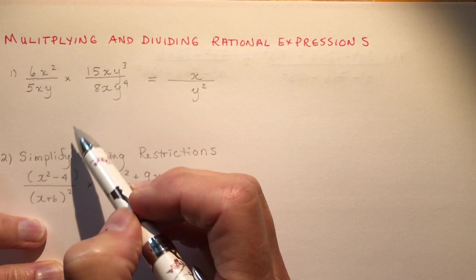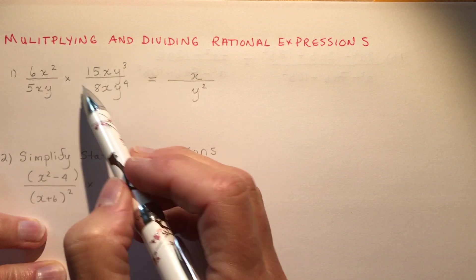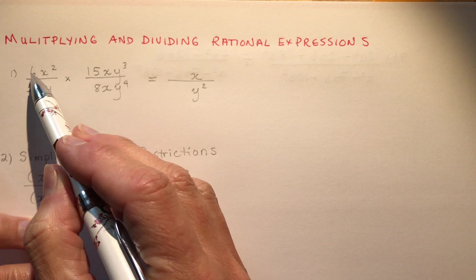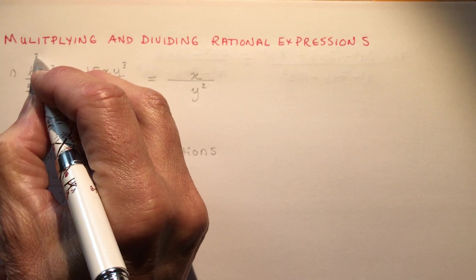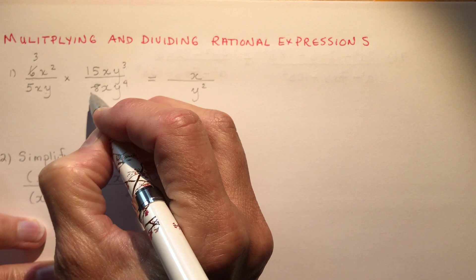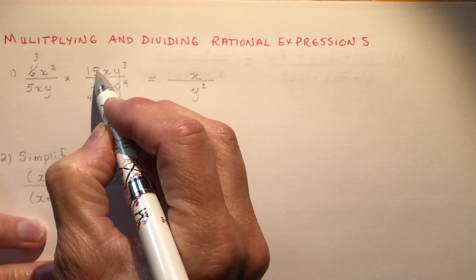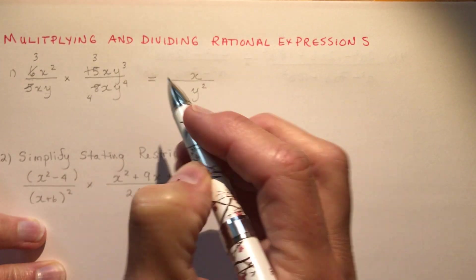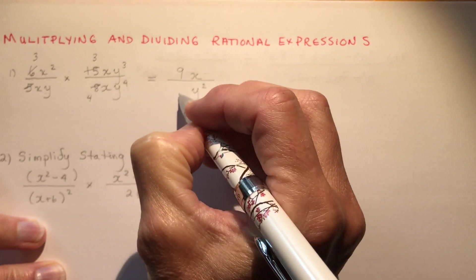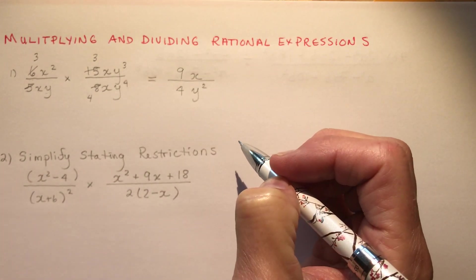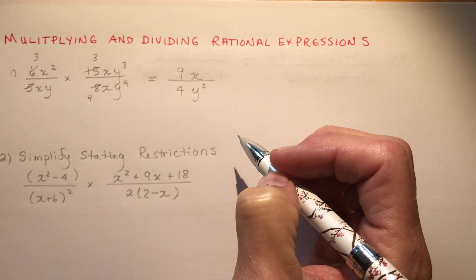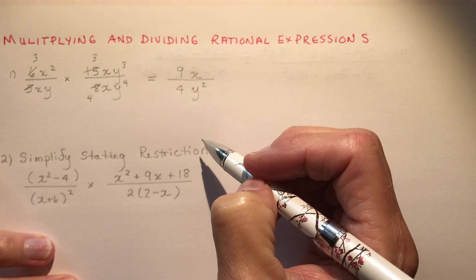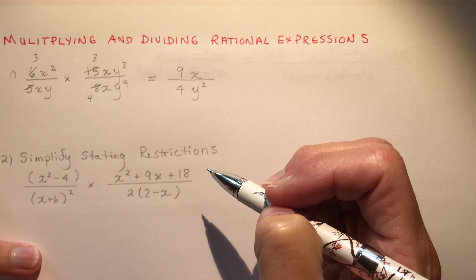And all I have to do is do this. So I have 6 times 15, and I can simplify this by dividing numerator and denominator. Because I have 6 and 8, I can divide each of these by 2, so that gives me 3 over 4. And this 5 would go into the 15 three times. So that gives me 3 times 3 is 9 over 4. That's probably the easiest way to do it.